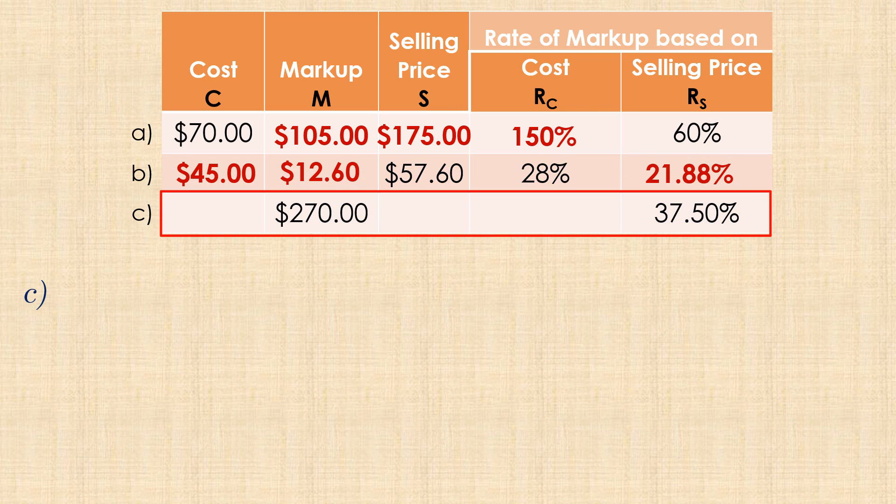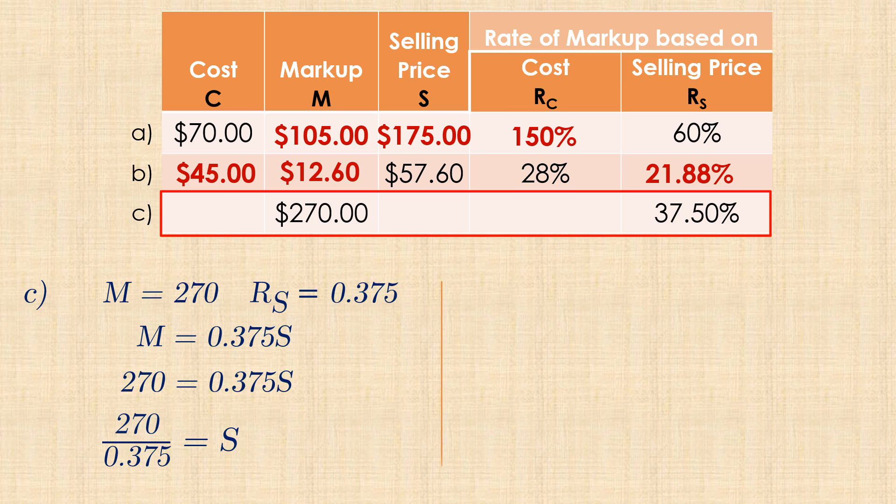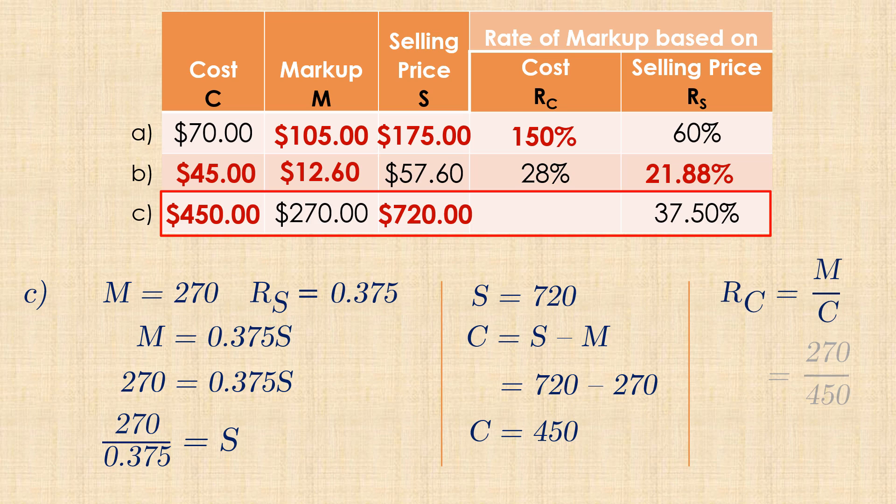In Part C, we have a markup of $270 and a rate of markup based on Selling Price of 37.5%. That is, markup equals 0.375S or 270 equals 0.375S. Dividing both sides by 0.375, we have a Selling Price of $720. Cost is therefore Selling Price minus markup, which is $450. And finally, the rate of markup based on cost is 270 over 450, which is 0.6 or 60%.